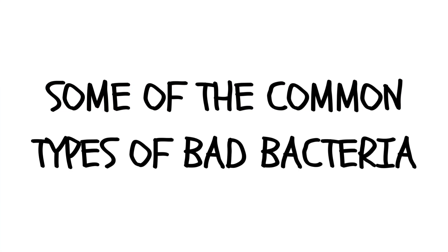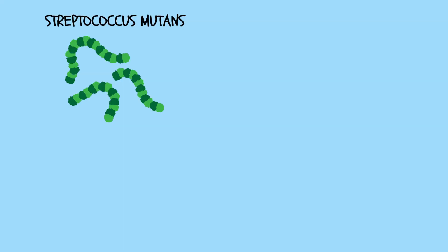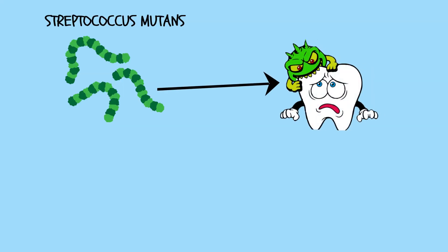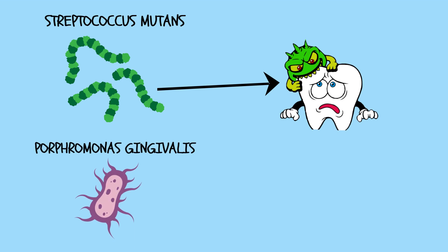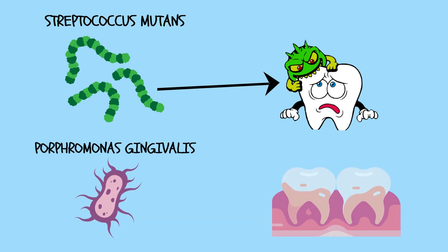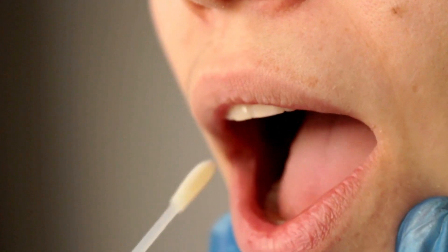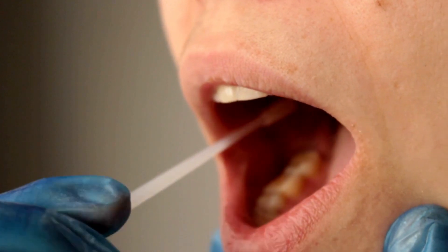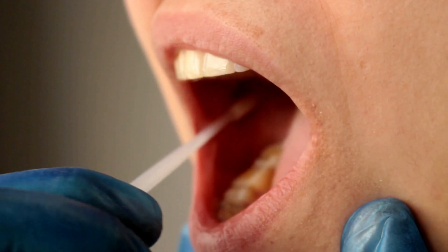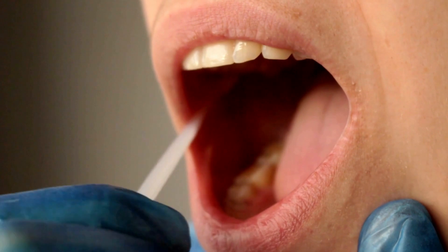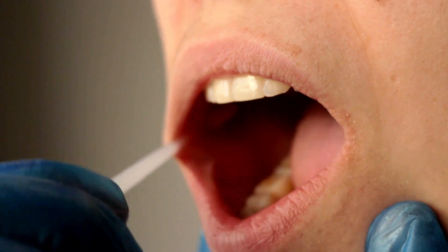While the majority of these bacteria are harmless and essential for maintaining good oral health, some are harmful and can cause dental and oral health problems. Some of the common types of bad bacteria found in the mouth include Streptococcus mutans, which is a major contributor to tooth decay, and Porphyromonas gingivalis, which is associated with gum disease. To maintain good oral health, it is important to keep the balance of microorganisms in the mouth in check.